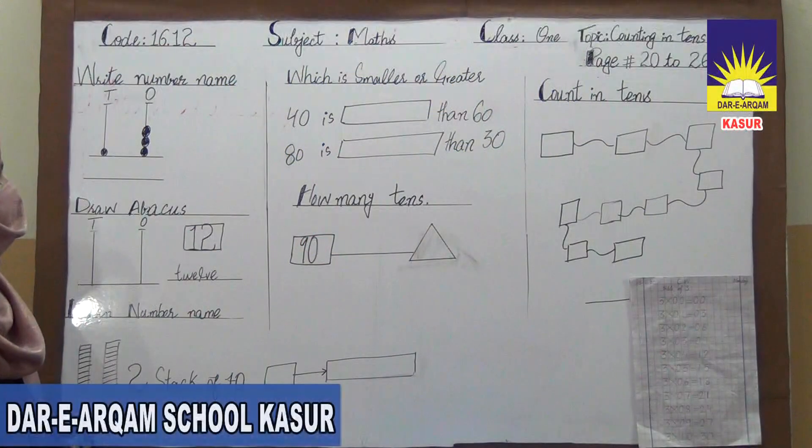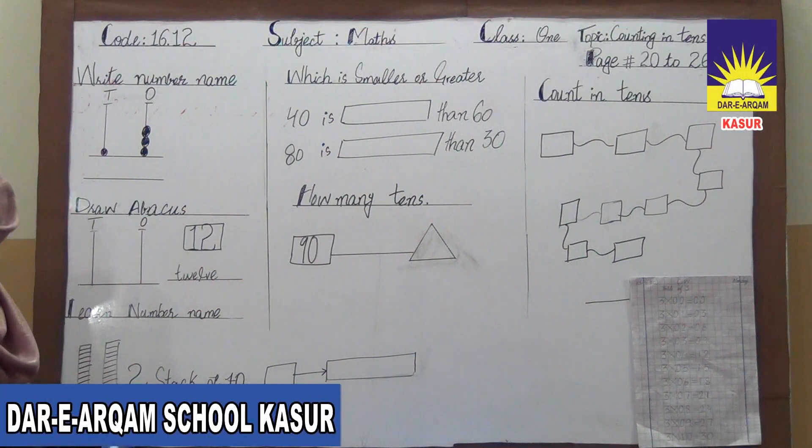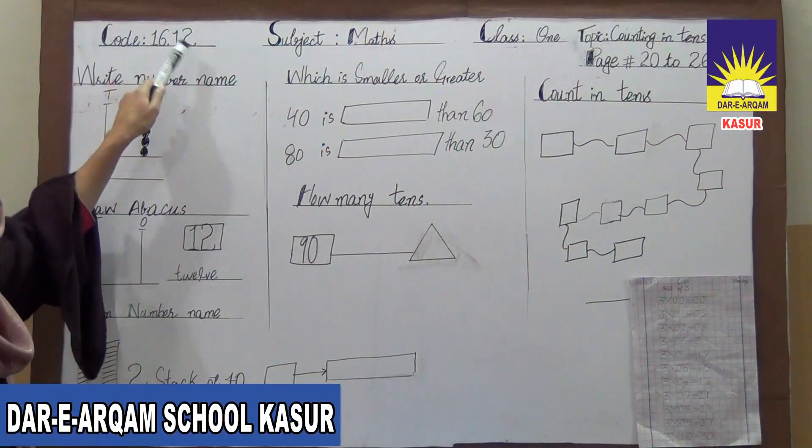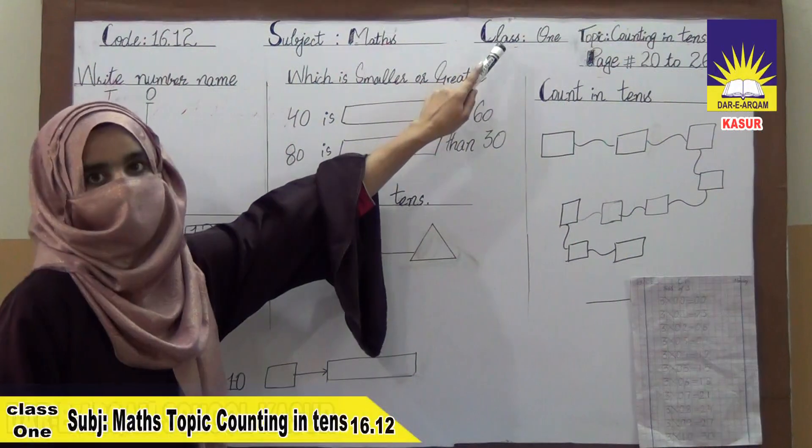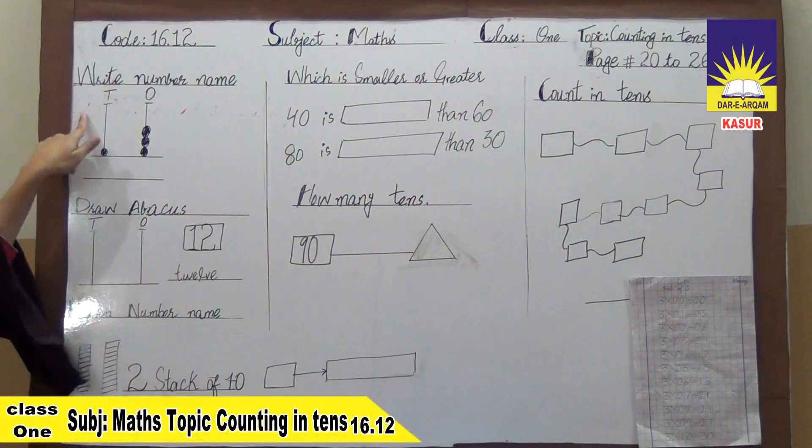Assalamualaikum. Today we are going to learn about Maths. Our topic is Counting in Tens, Code is 16.12, and we are going to learn about class 1's topic. So first question is write number name.